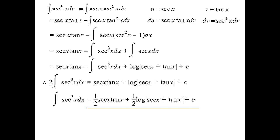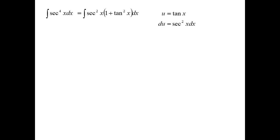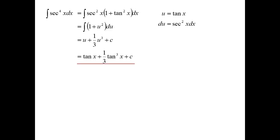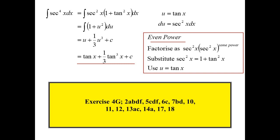That's how we do sec cubed — whenever you have an odd power on a sec, you've got to do it by parts. So whenever you're doing your assessment, you hope: please be even, because the even ones are a lot easier. Sec to the power of four is an even power — pull the sec squared out, make it 1 plus tan squared, and we can do u equals tan x. So 1 plus u squared — so much quicker when they're even powers. Even powers: always pull the sec squared out, then change the remaining sec squared to 1 plus tan squared, and it's a simple substitution. And that covers all of our trig integrals.